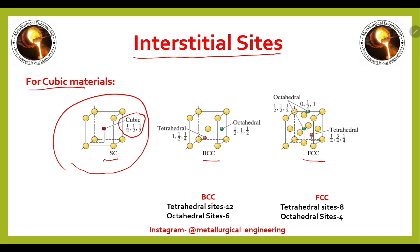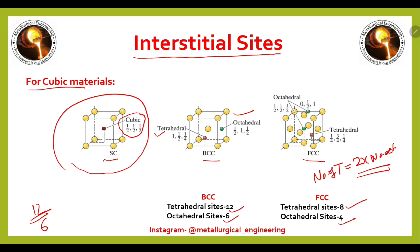For BCC and FCC, the important interstitial sites are tetrahedral and octahedral. The number of tetrahedral sites in BCC is 12 and the number of octahedral sites in BCC is 6. In FCC, the number of tetrahedral sites is 8 and the number of octahedral sites is 4, so tetrahedral sites are 2 times the number of octahedral sites. For hexagonal close-packed material, the number of tetrahedral sites is 12 and the number of octahedral sites is 6.